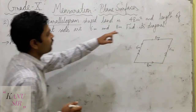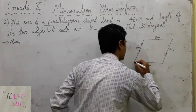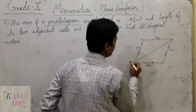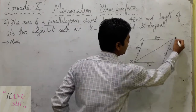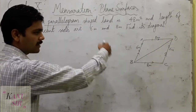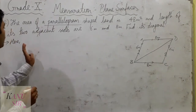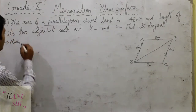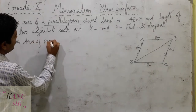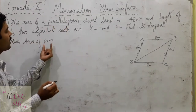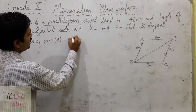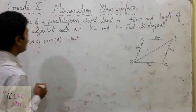But what is asked here? Find the diagonal. So we need to find the length of the diagonal. Let us give the names of the sides A, B, C, D in a clockwise direction. First we have to write the given terms: area of parallelogram — the short form is 'palm' — A equals 48 square meters.